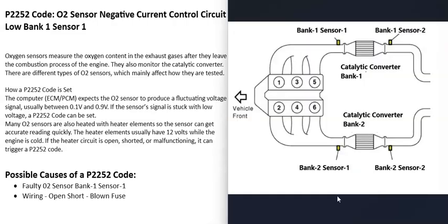There are going to be two O2 sensors on each bank of the engine. Sensor one is located before the catalytic converter and is also called the upstream O2 sensor. Sensor two is located after the catalytic converter and is called the downstream O2 sensor. With a P2252 code, the sensor to locate on the vehicle is the bank one sensor one O2 sensor.